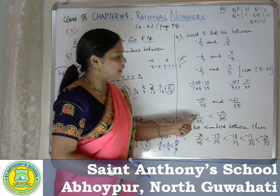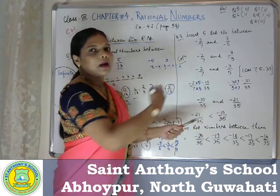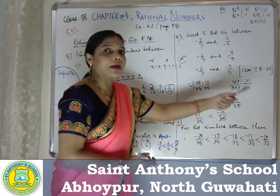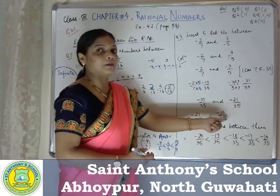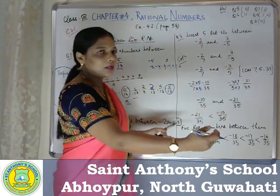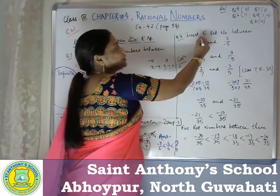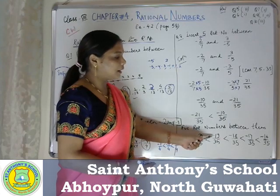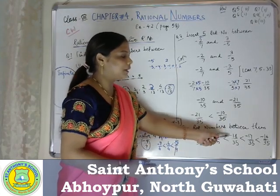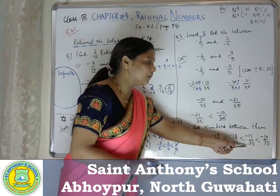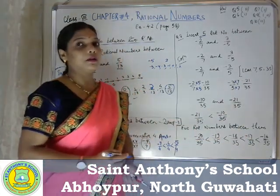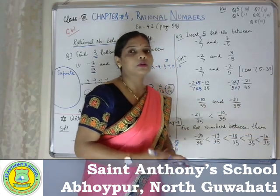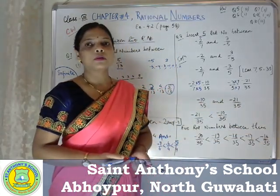Now you have so many numbers between minus twenty-one and minus ten: minus twenty, minus nineteen, minus eighteen, minus seventeen, minus sixteen, till minus ten. They are asking only to write five rational numbers, so my five rational numbers will be minus twenty by thirty-five, minus nineteen by thirty-five, minus eighteen by thirty-five, minus seventeen by thirty-five, and minus sixteen by thirty-five. You can also choose another set of five numbers from this range — that is also correct.